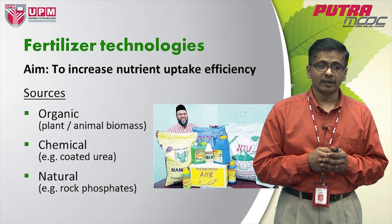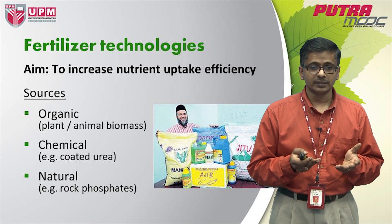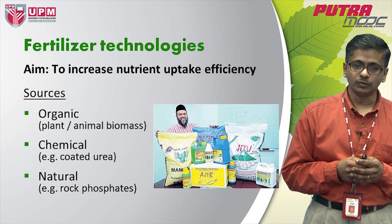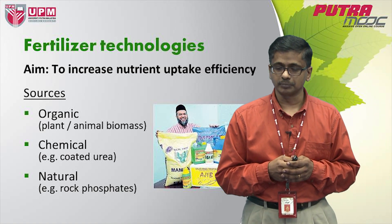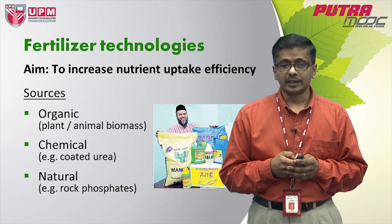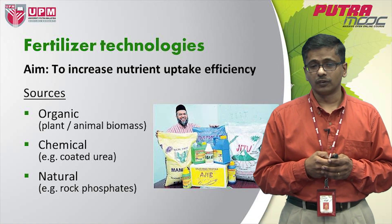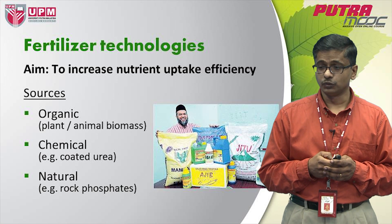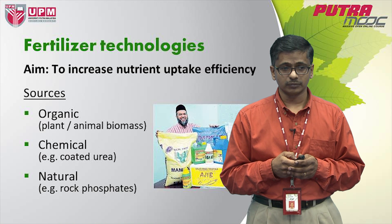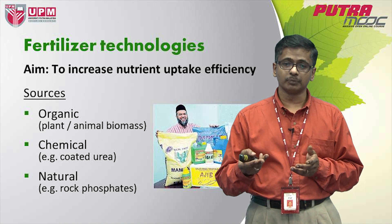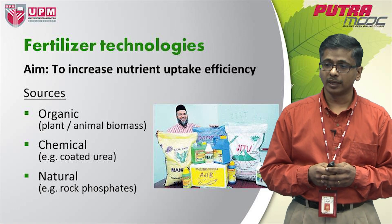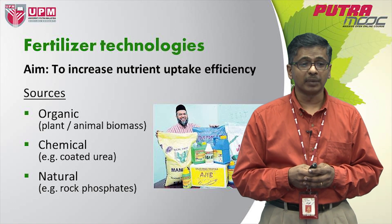We also have natural fertilisers. A good example here is rock phosphates, which are usually found as deposits in a natural environment and provide phosphorus nutrients into plants. Phosphorus is a very important nutrient. Nitrogen, phosphorus, and potassium are the three basic macro elements that are required by plants.